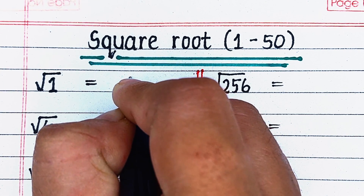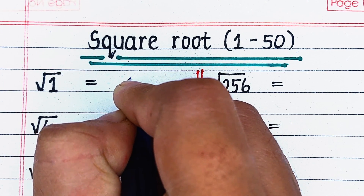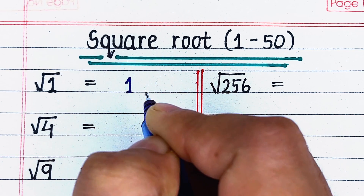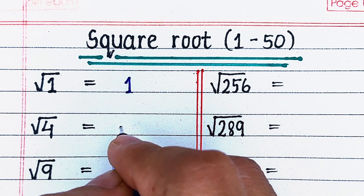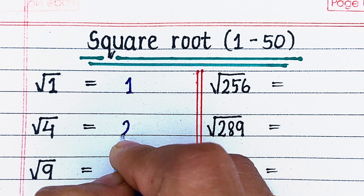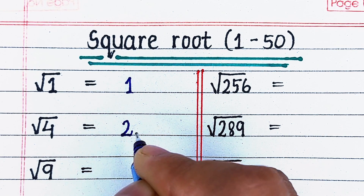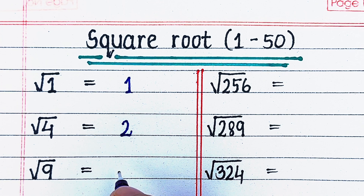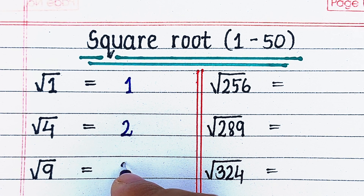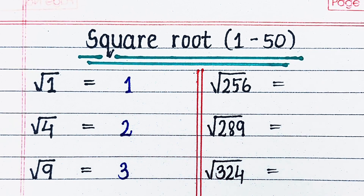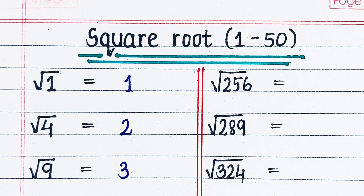Hello viewers, welcome to our YouTube channel Try to Learn. In this video we will learn square roots of square numbers from 1 to 2500. If you find this video helpful please hit the like button and for more such videos consider subscribing to our channel Try to Learn. Square root of 1 is 1.